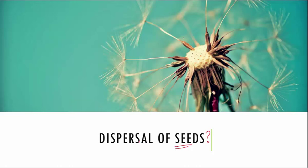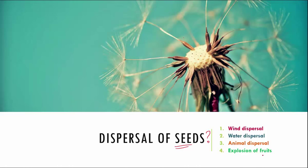There are various ways in which seeds get dispersed, and that is what we will study in this part of the chapter. First is dispersal by wind, second is water dispersal, then animal dispersal, and then we will talk about explosion of fruits. Wind, water and animals are considered as the agents of dispersal. Now let us study each of these one by one with examples.